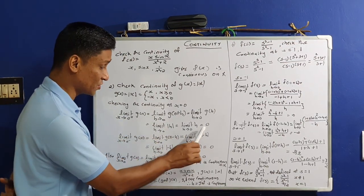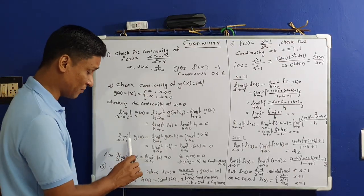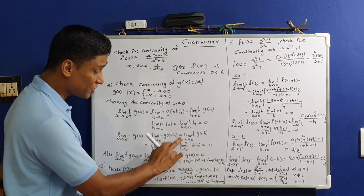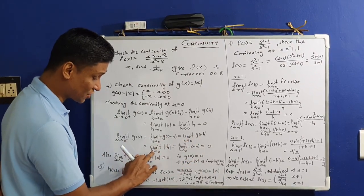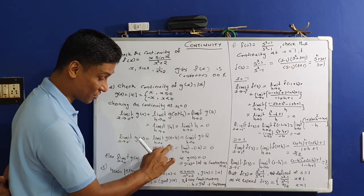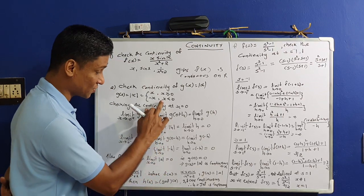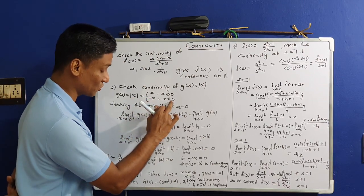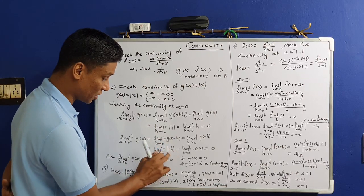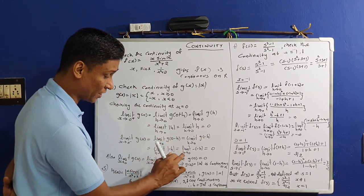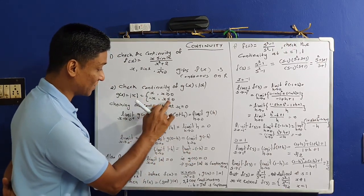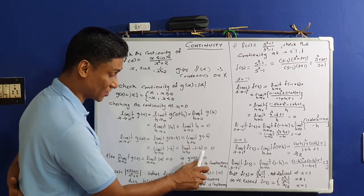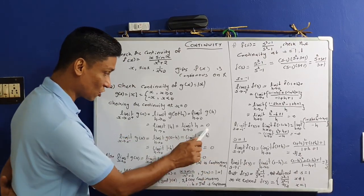Now for the left limit: limit x→0⁻ of g(x) = limit h→0 of g(0−h) = limit h→0 of g(−h) = limit h→0 of |−h|. Since −h is always less than 0, by definition |−h| = −(−h) = h. So the left limit is also 0.